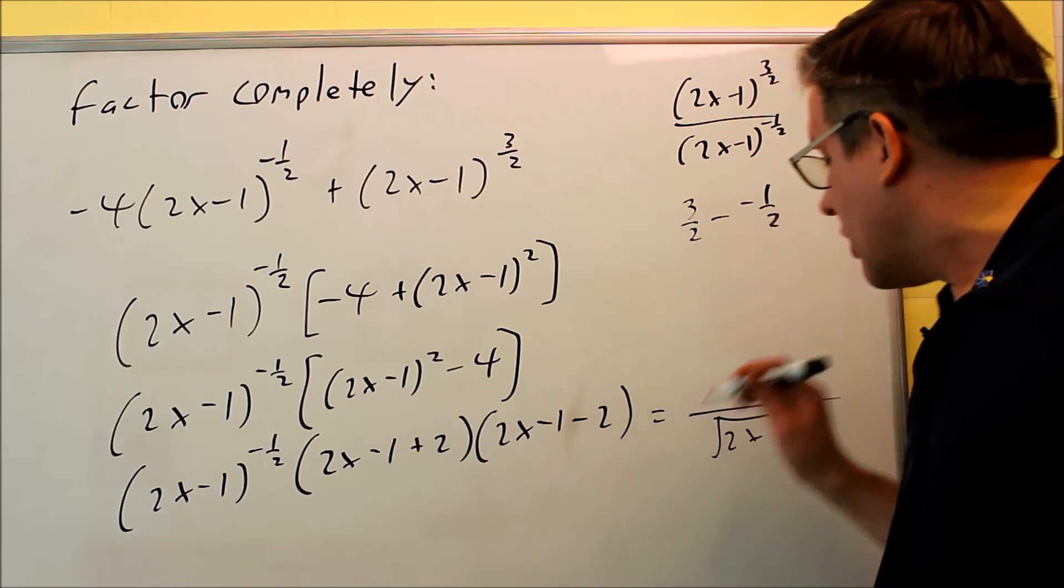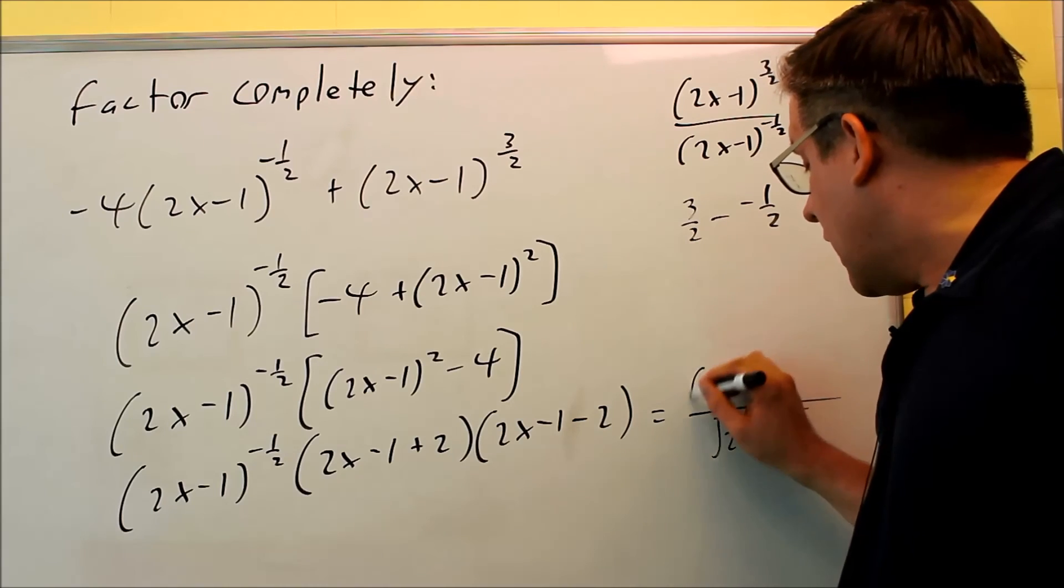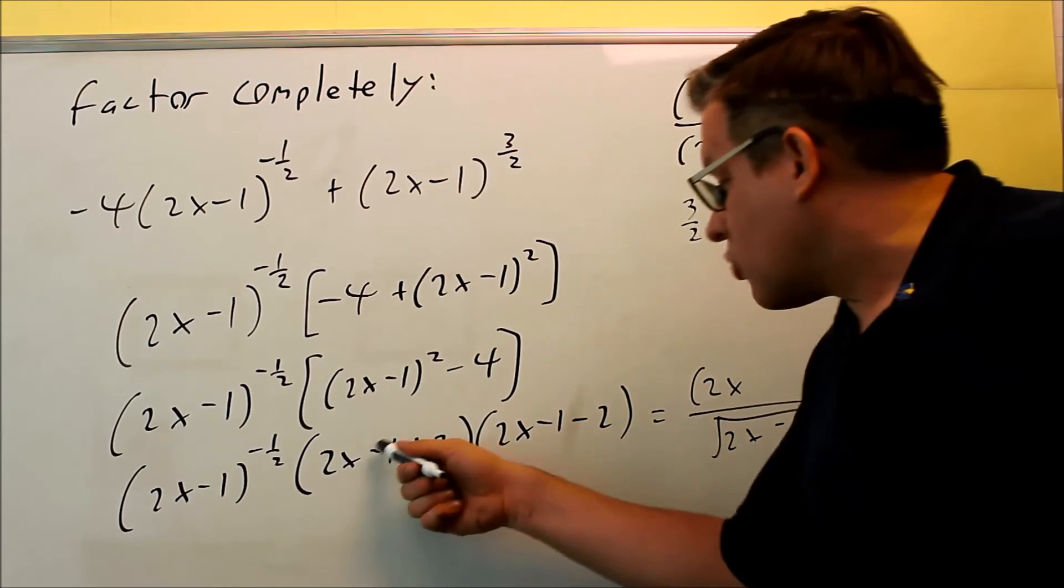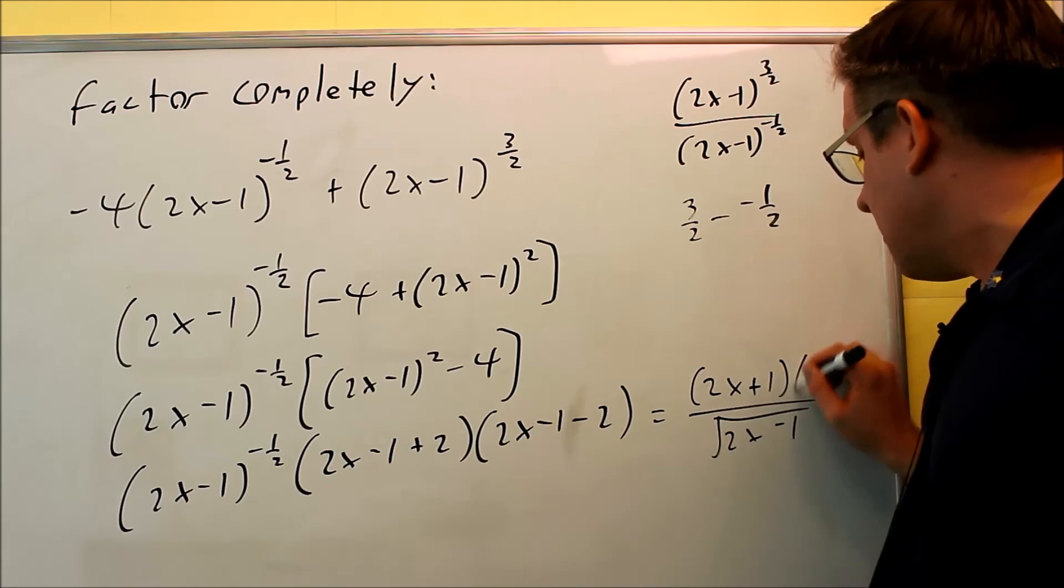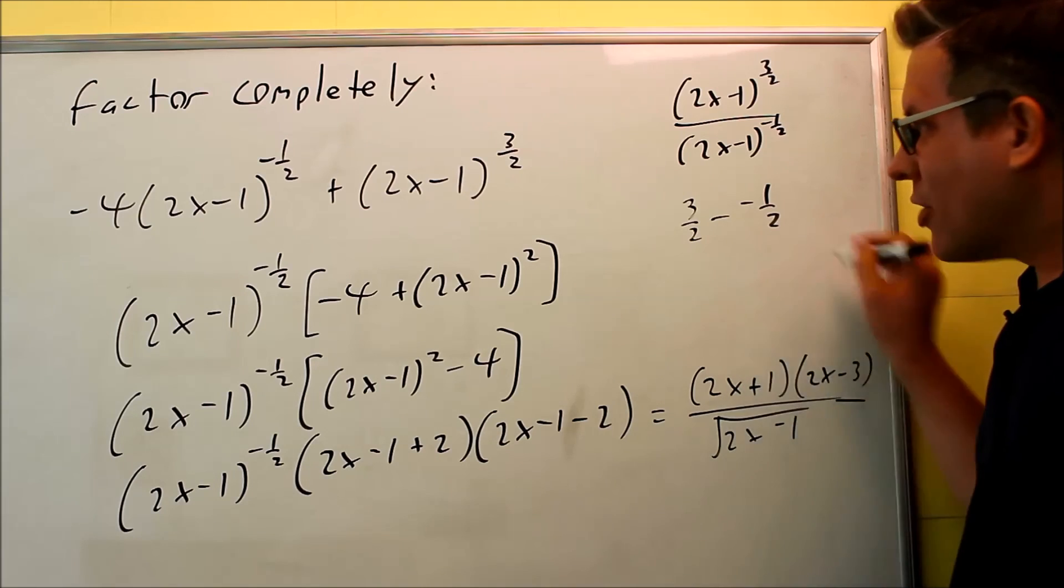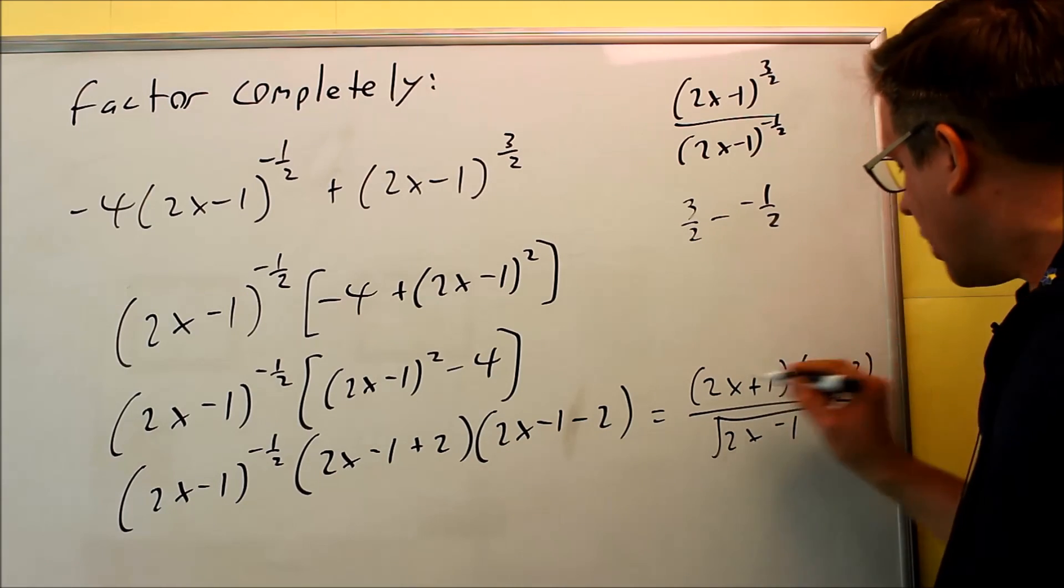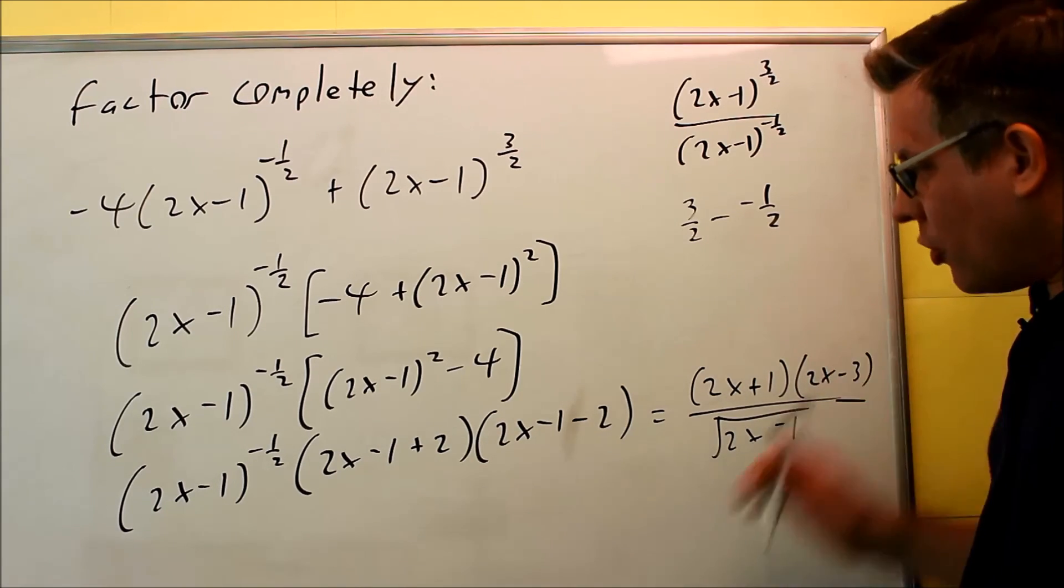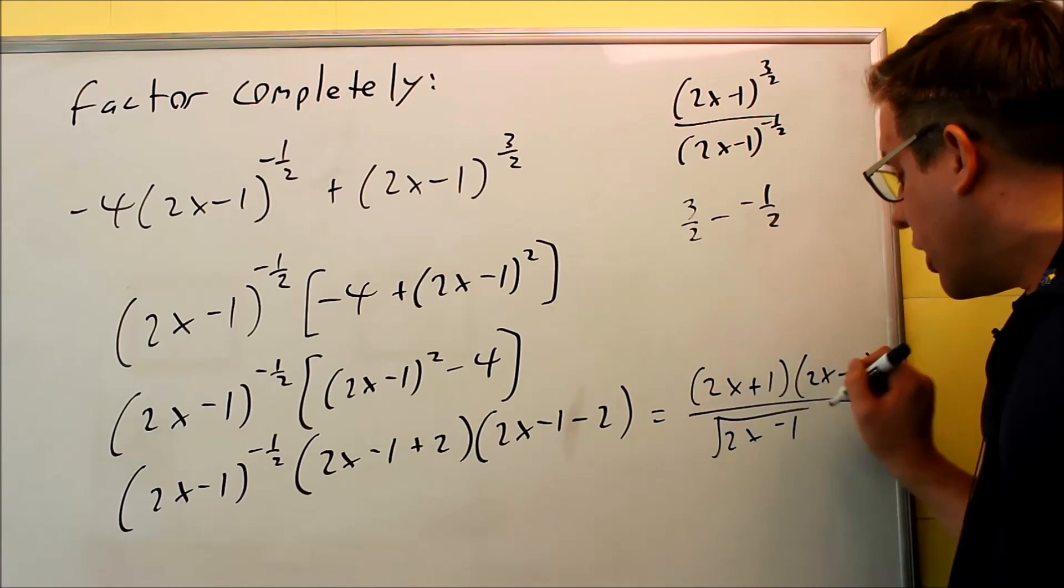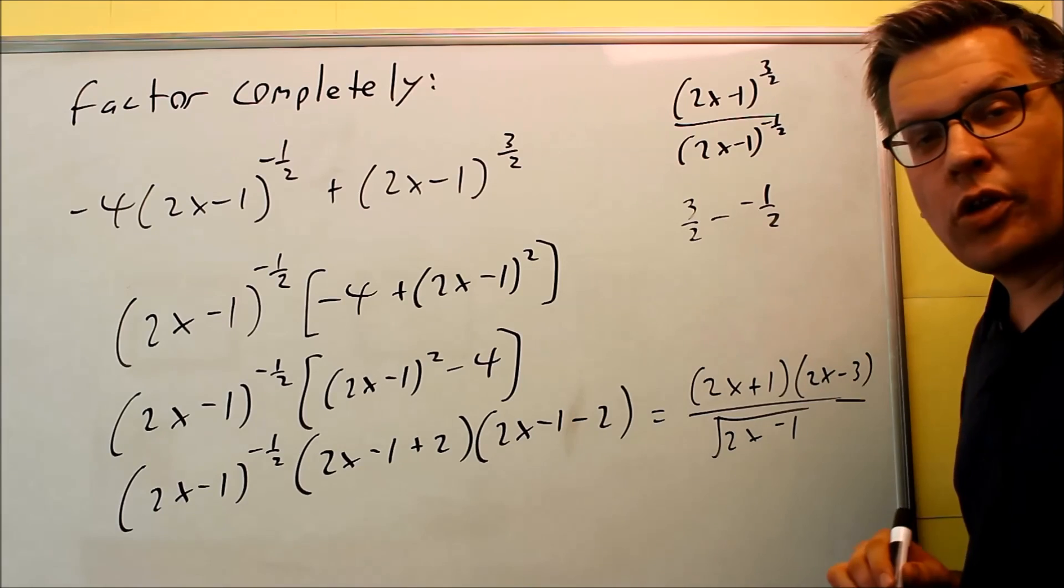And the last thing we'll do is just write this out on top. So I have 2x minus 1 plus 2, so 2x plus 1, and I have 2x minus 3. That's going to go on top there, and this would be considered fully factored. You've got the part that's factored on top. You could leave that one on the outside if you wanted to, or you can rewrite it like this where you have a square root on the bottom.